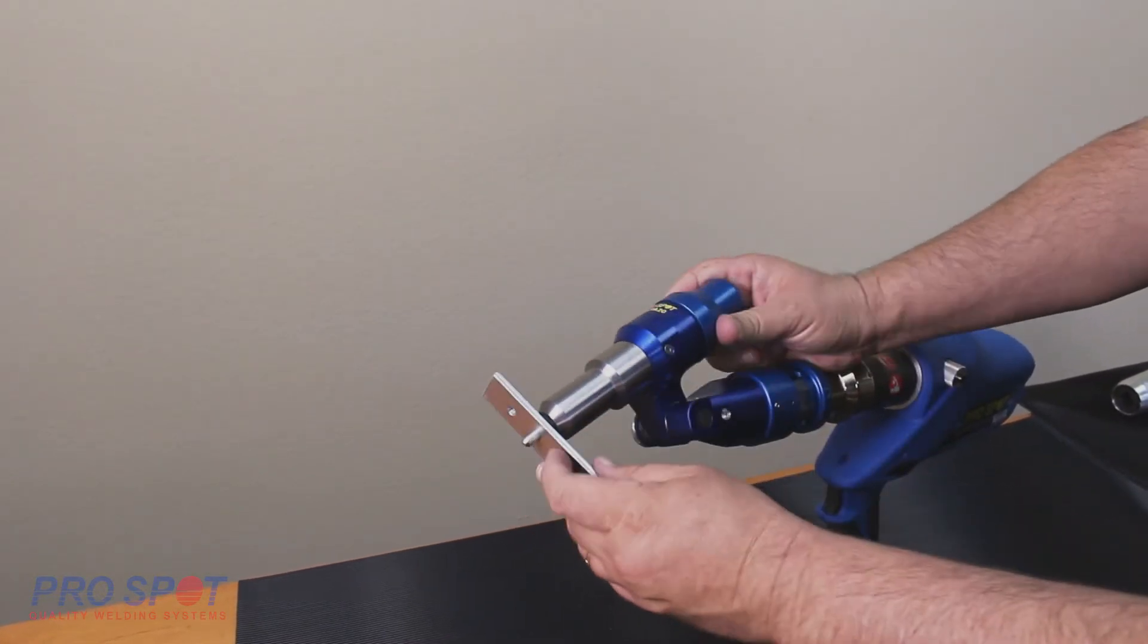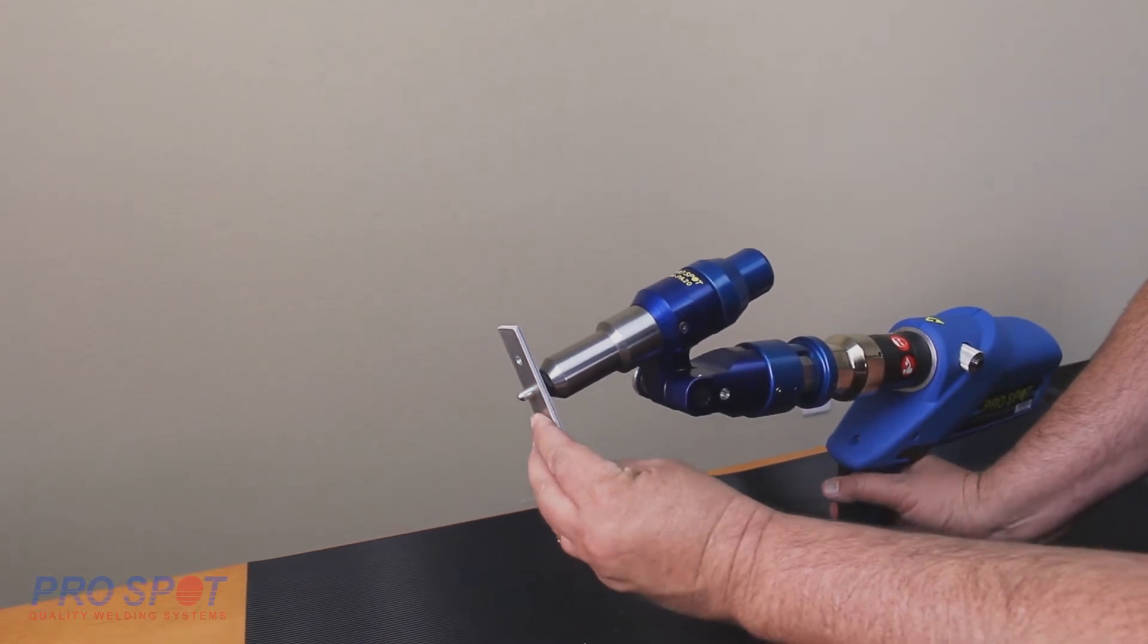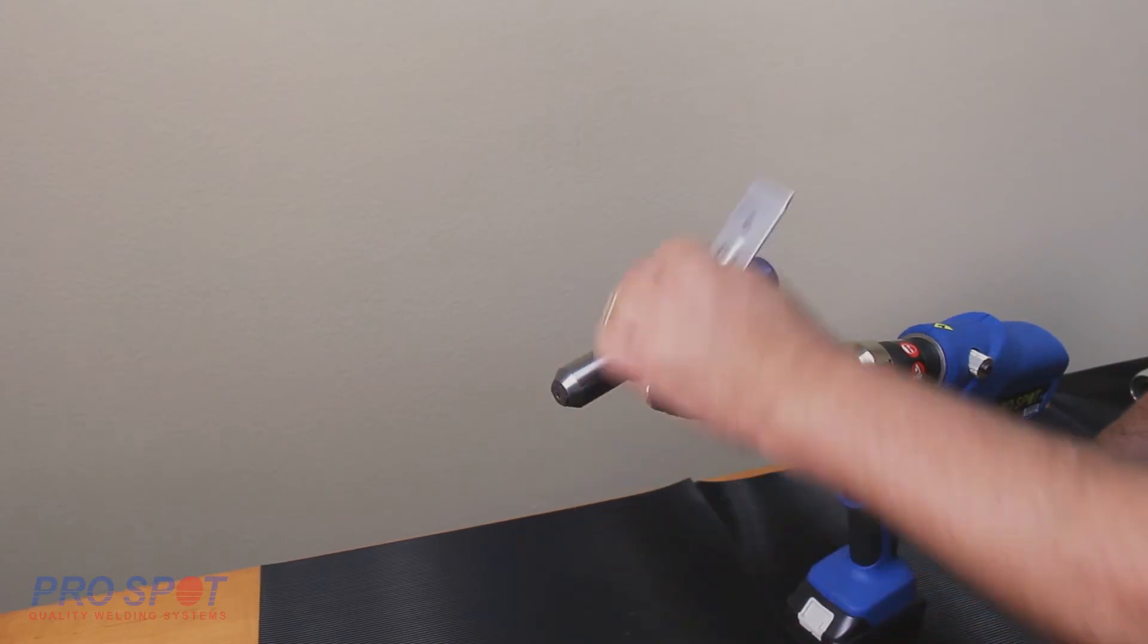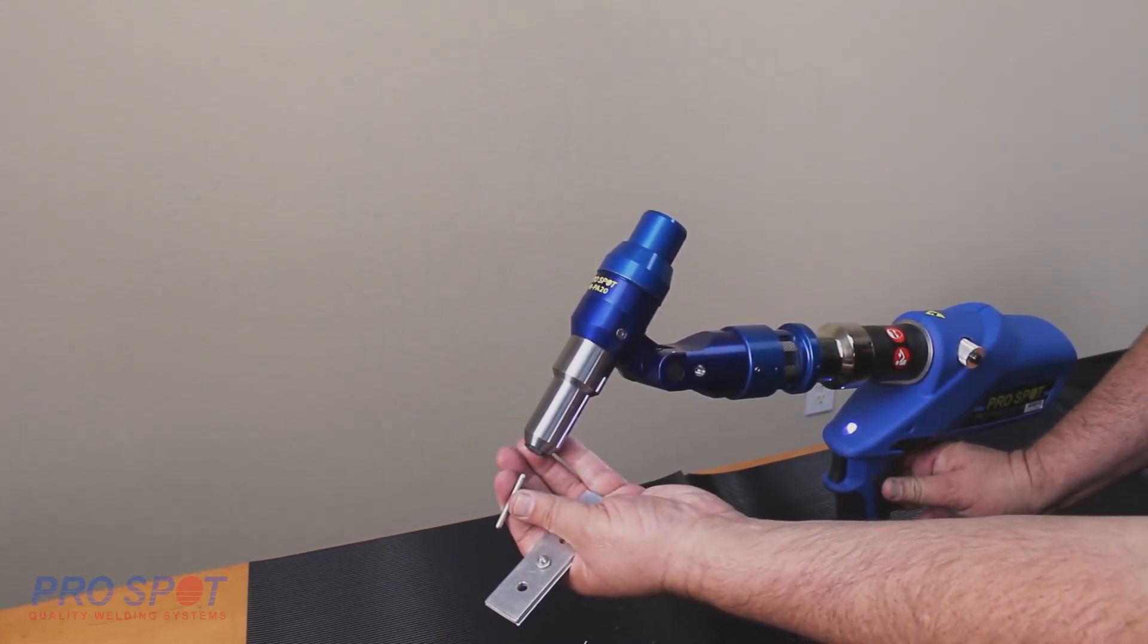Next, to complete the process, simply press and hold the trigger until the stem of the blind rivet snaps off and your application is complete. Press the release button and the stem will fall out.